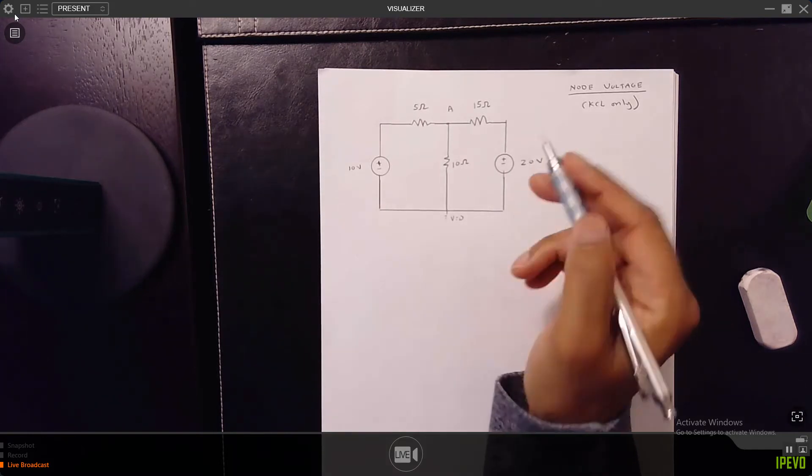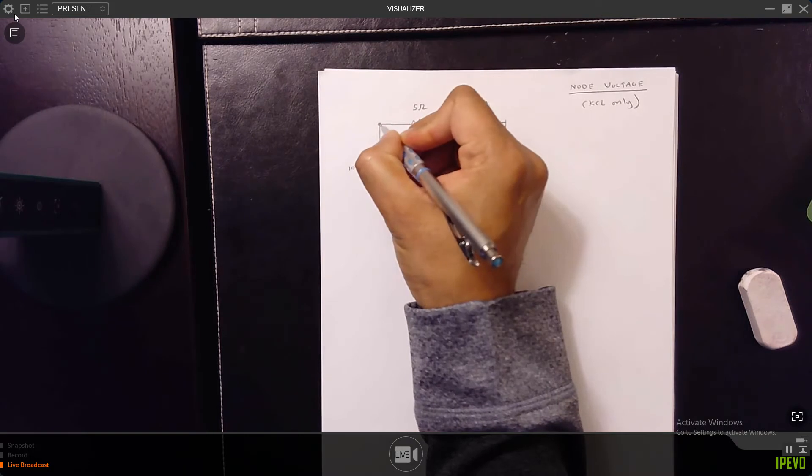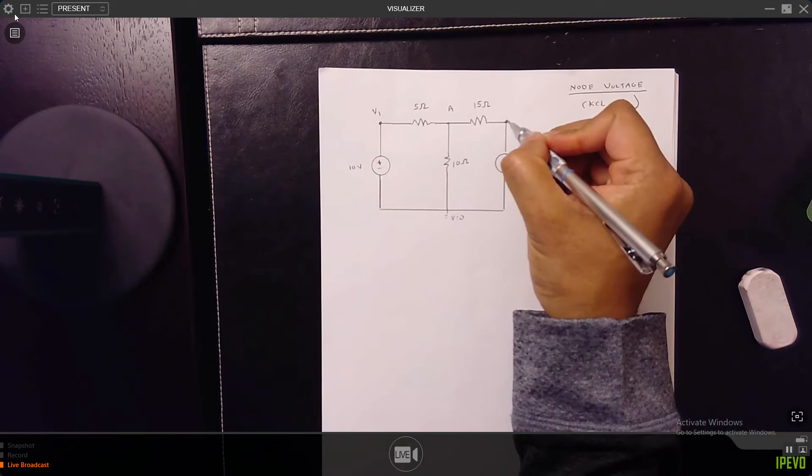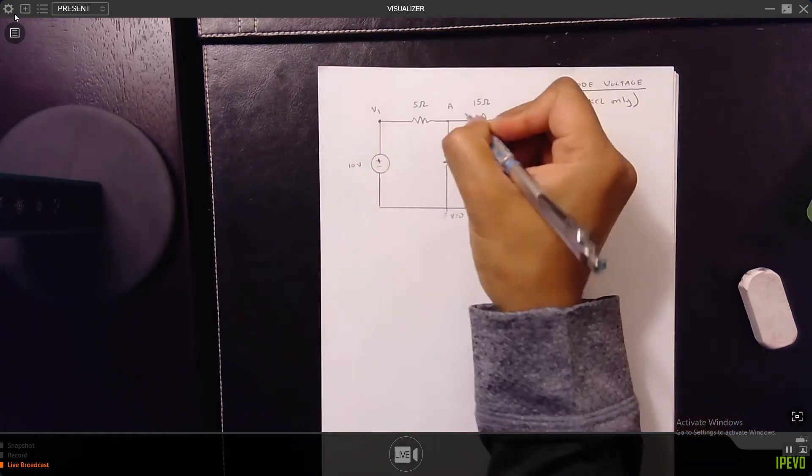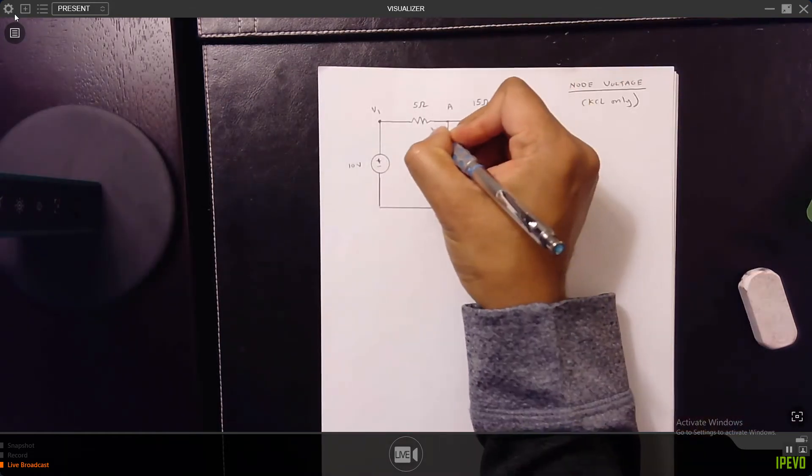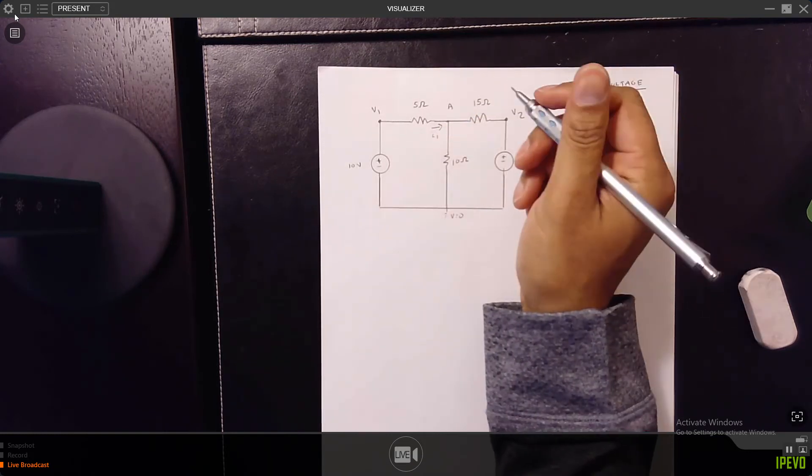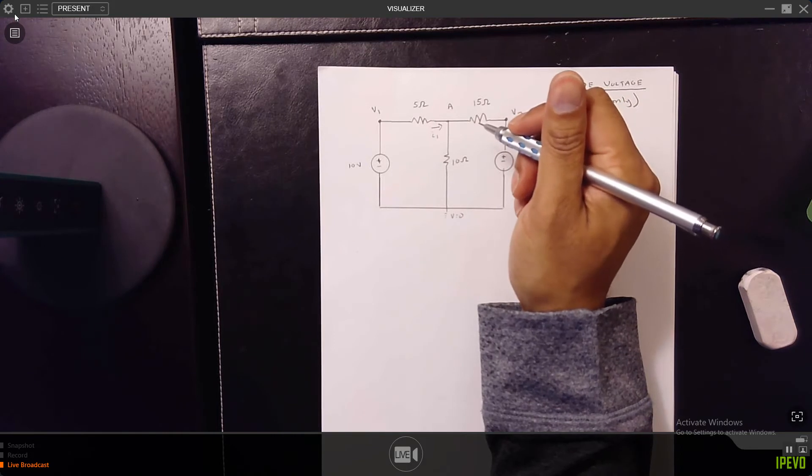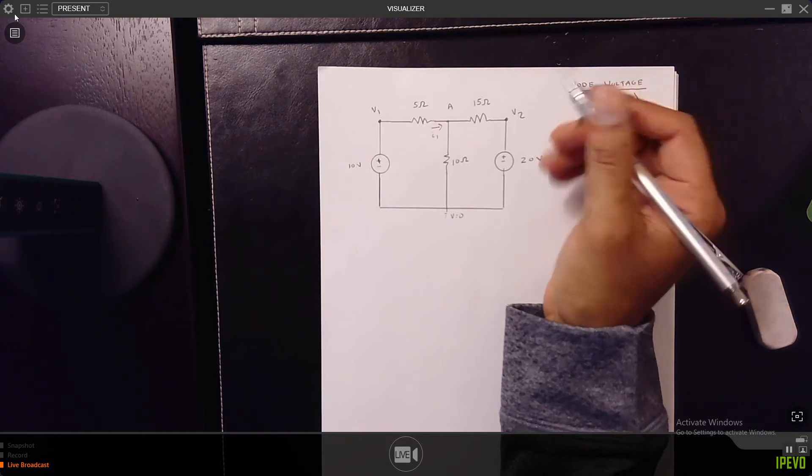The second thing you want to do is above each source - so this is the source, you put a temporary node. I call this V1. This has a source, I call this V2. Those are my initial assumptions. Now third thing we do is you draw in the currents. We assume the current in this direction and the reason we make these assumptions is because I found that this is a foolproof way to do it.